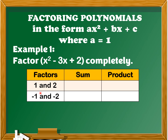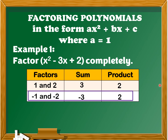Next, we determine the sum of the factors. The sum of 1 and 2 is 3, and the sum of negative 1 and negative 2 is negative 3. Next, we determine the product of the factors. The product of 1 and 2 is 2, and the product of negative 1 and negative 2 is positive 2. The constant term represents the product of the factors, while the second term represents the sum. We need negative 3 for the sum and positive 2 for the product, so we will consider negative 1 and negative 2.